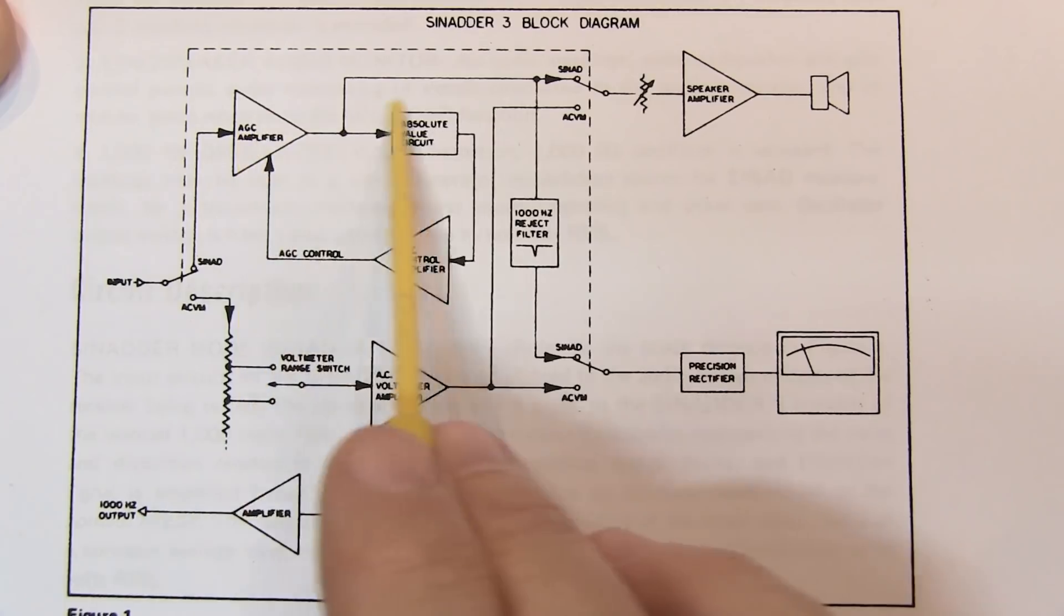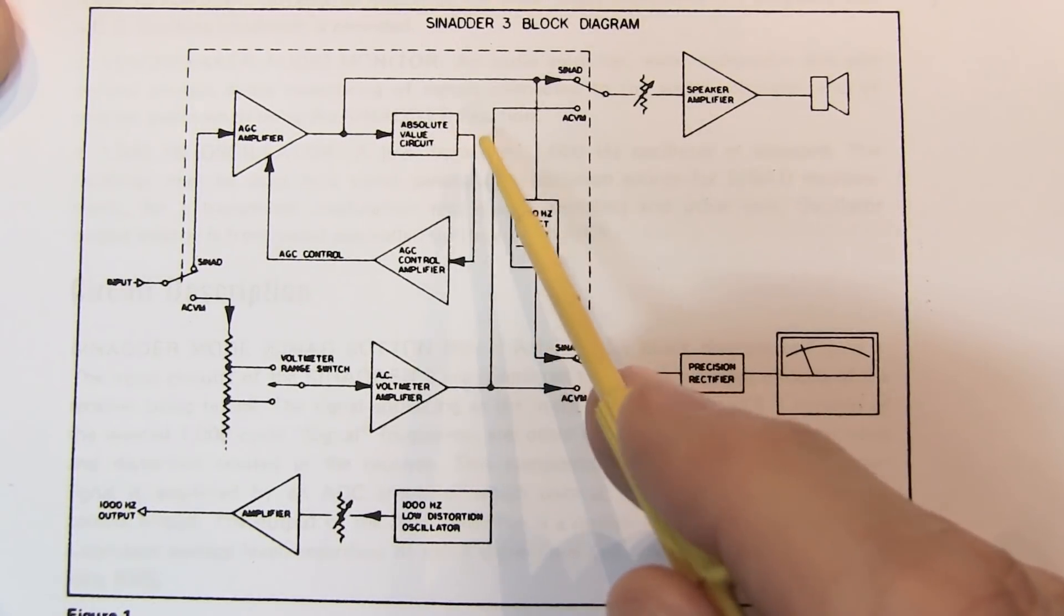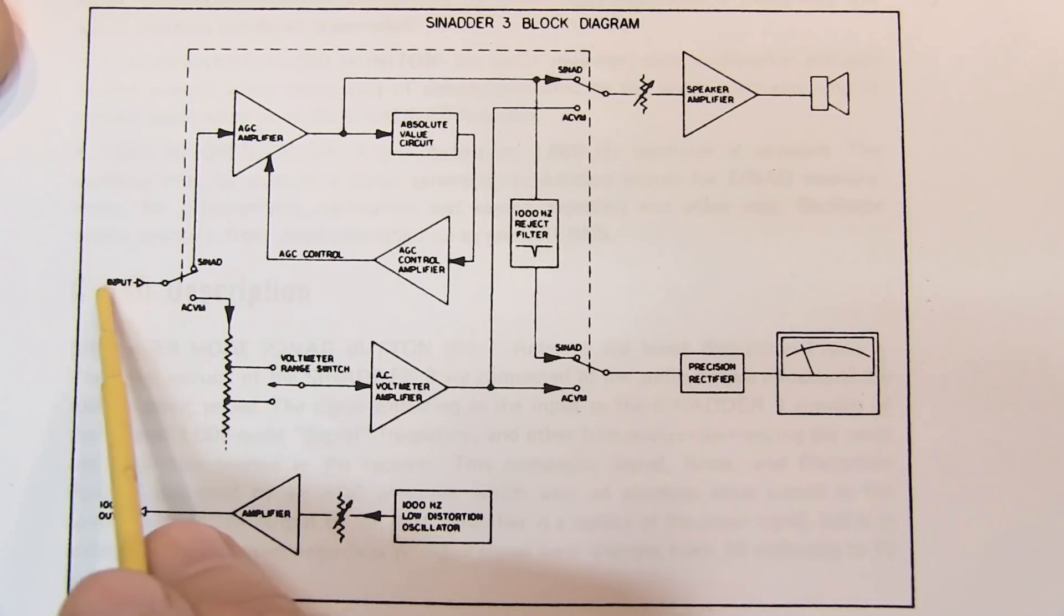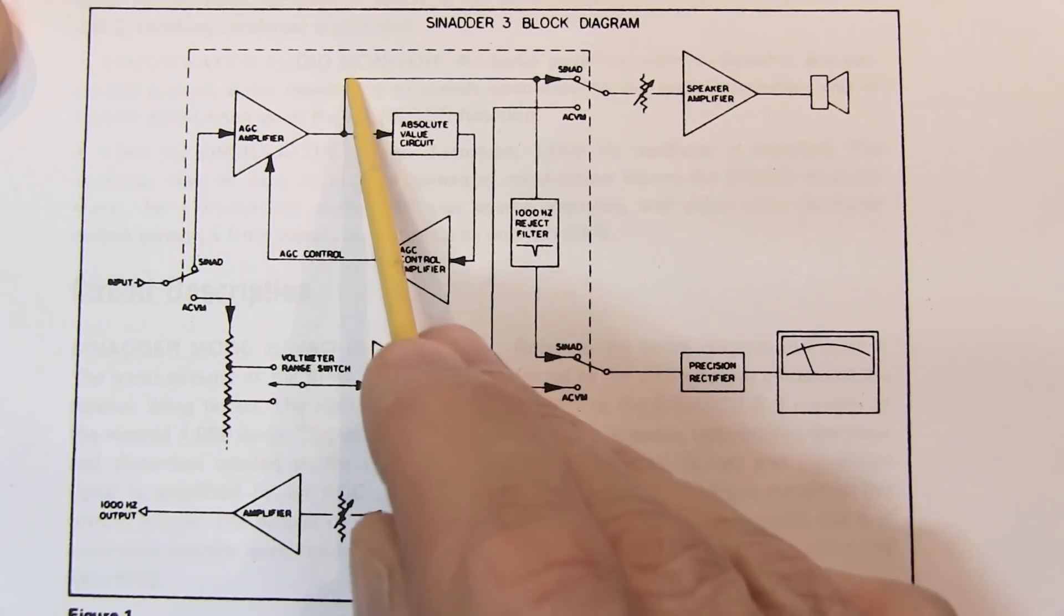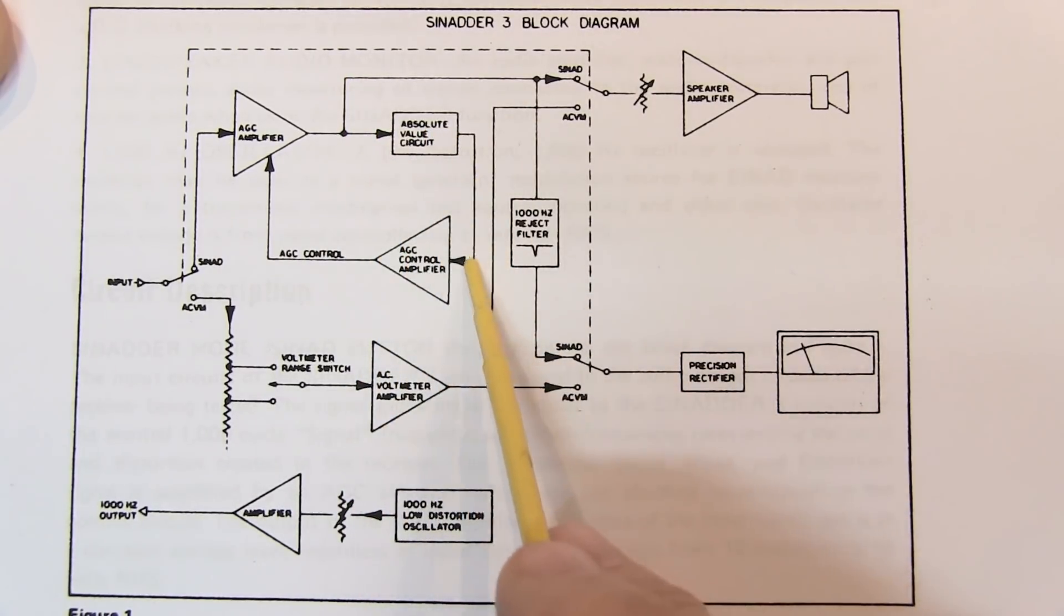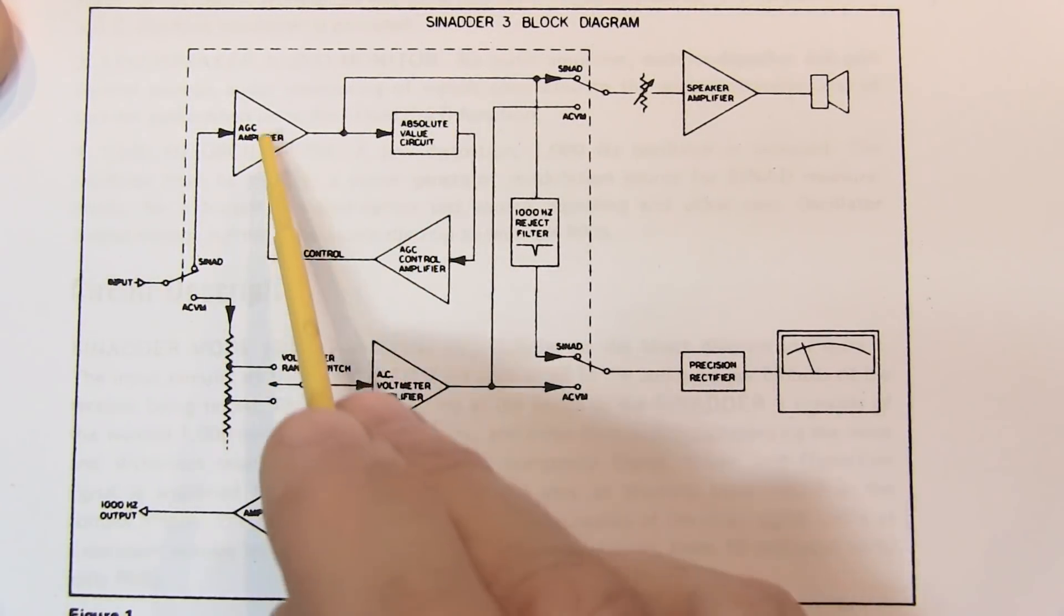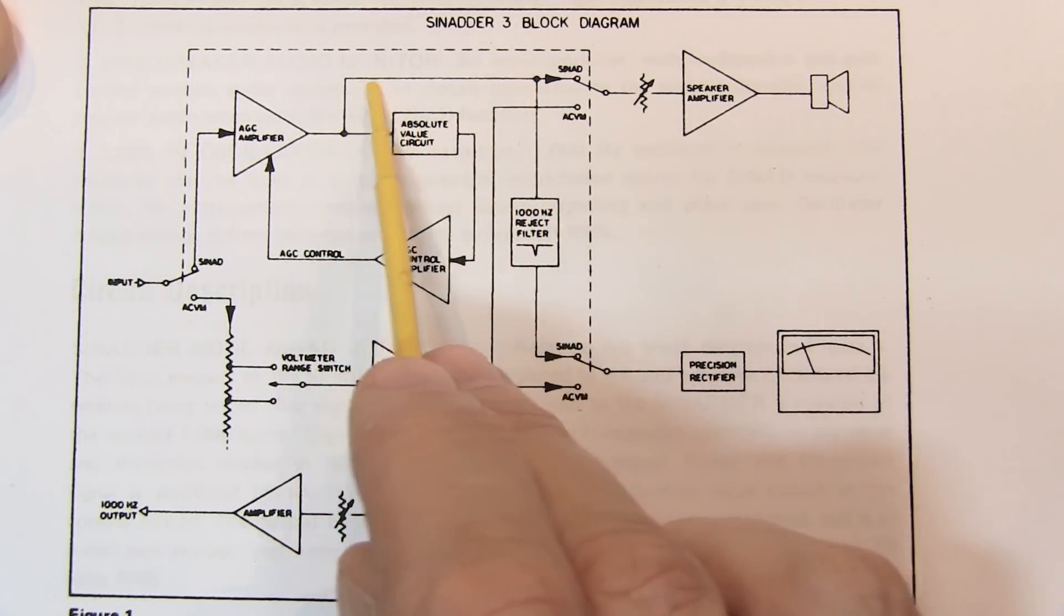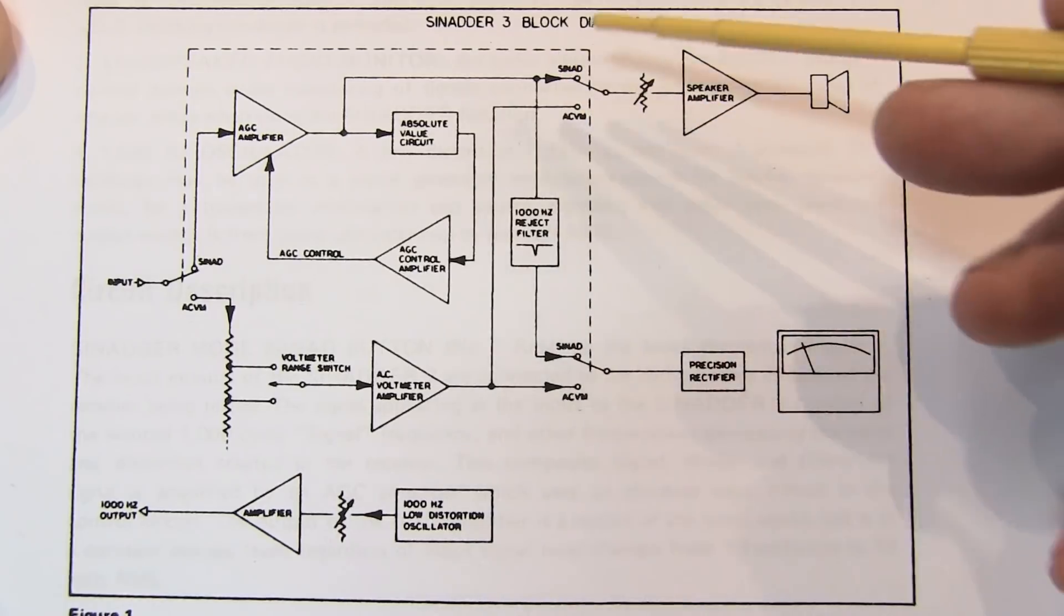Now the first thing it sees is this loop. There's an AGC amplifier, an absolute value circuit, which you can consider as a precision full-wave rectifier circuit, an AGC control amplifier, and a control loop coming back. And the idea with this loop is to take whatever input signal we've got coming in here, from 10 millivolts RMS or less up to several volts RMS, and make a constant amplitude signal appear here. So if the signal was too low, the AGC amplifier would turn the gain up to bring it up to a constant level, or if the signal was too high it would cut the gain down. The end result is to create a signal on this line, which is always 2 volts peak-to-peak, regardless of the input.